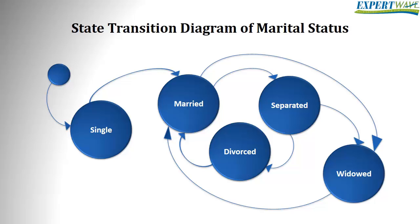Note that not all events have an effect in all states. Where an event doesn't have an effect on a given state, it's usually omitted, but it can be shown as an arrow starting from that state and returning to the same state to indicate that no transition takes place. This is sometimes known as a null transition or an invalid transition. In our example, you cannot get remarried while you are separated.